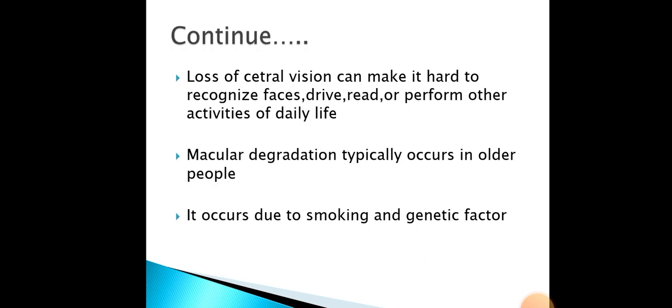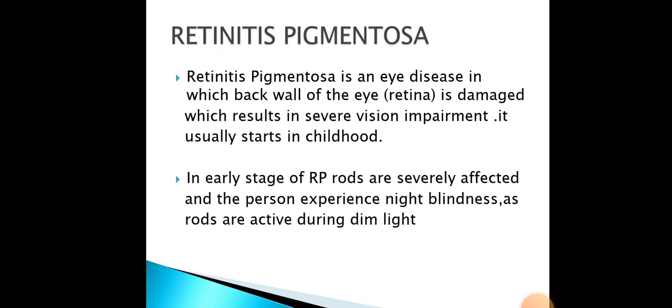The next main reason for blindness is retinitis pigmentosa. The two main conditions which cause blindness are macular degeneration and retinitis pigmentosa. Retinitis pigmentosa is an eye disease in which the back wall of the eye — the retina — is damaged, resulting in severe vision impairment. It usually starts in childhood. In the early stage, rods are severely affected and the person experiences night blindness, as rods are active during dim light. At the last stage, cone cells die and the person loses color vision, as cones are responsible for distinguishing colors.